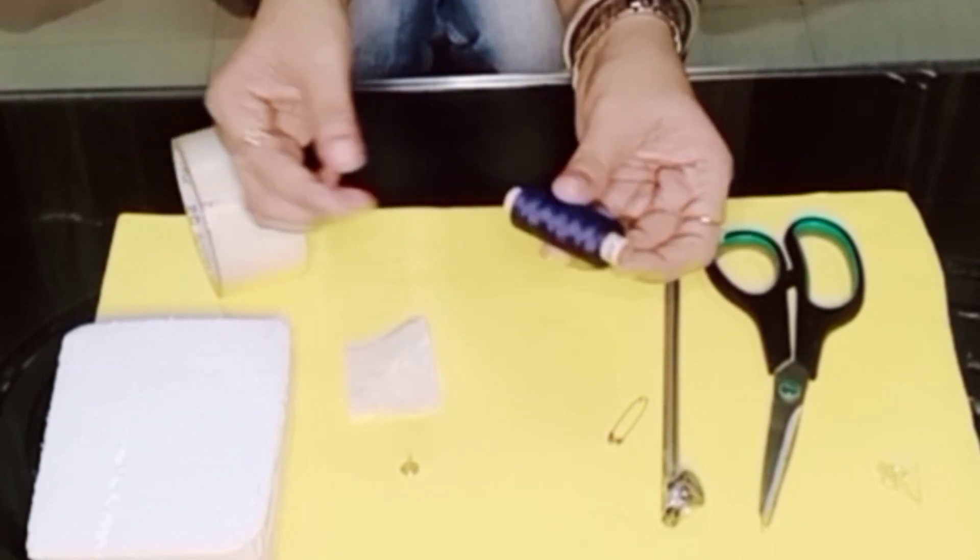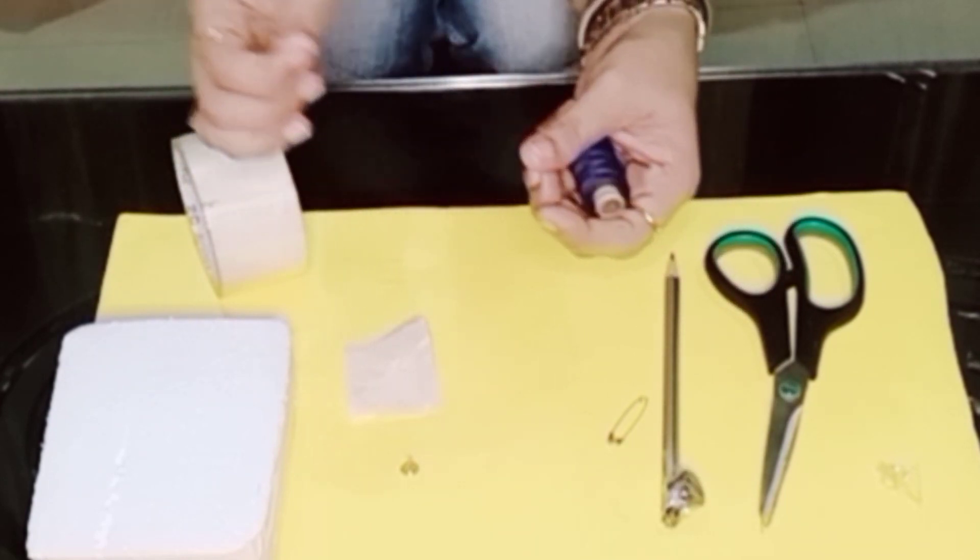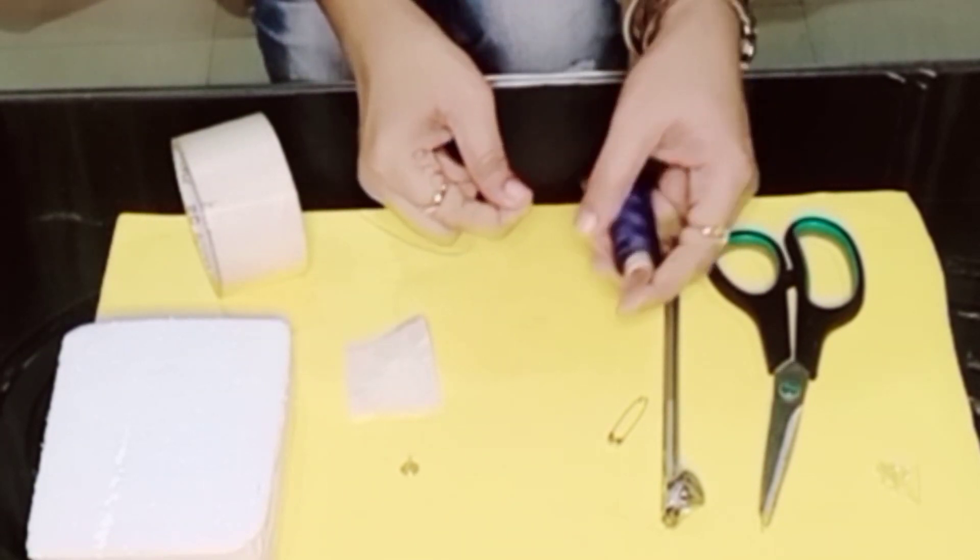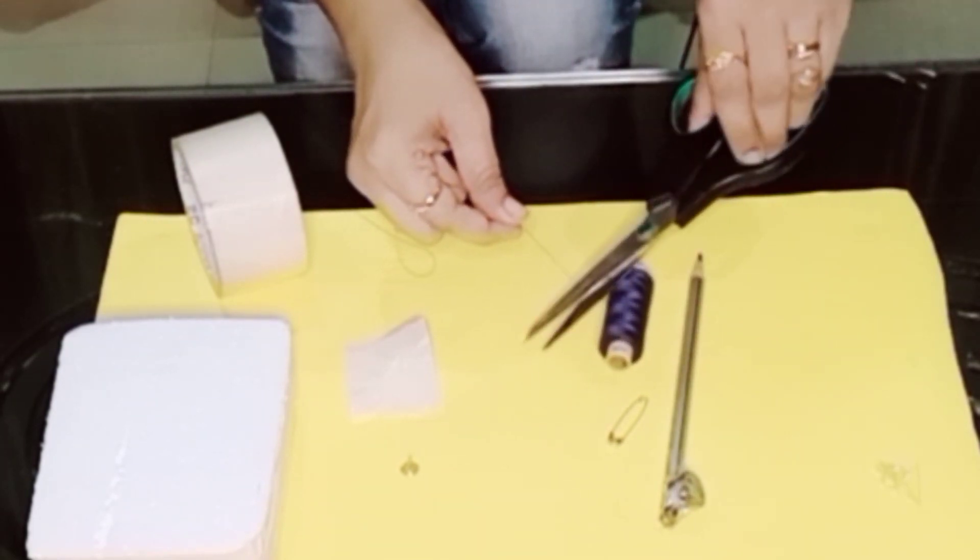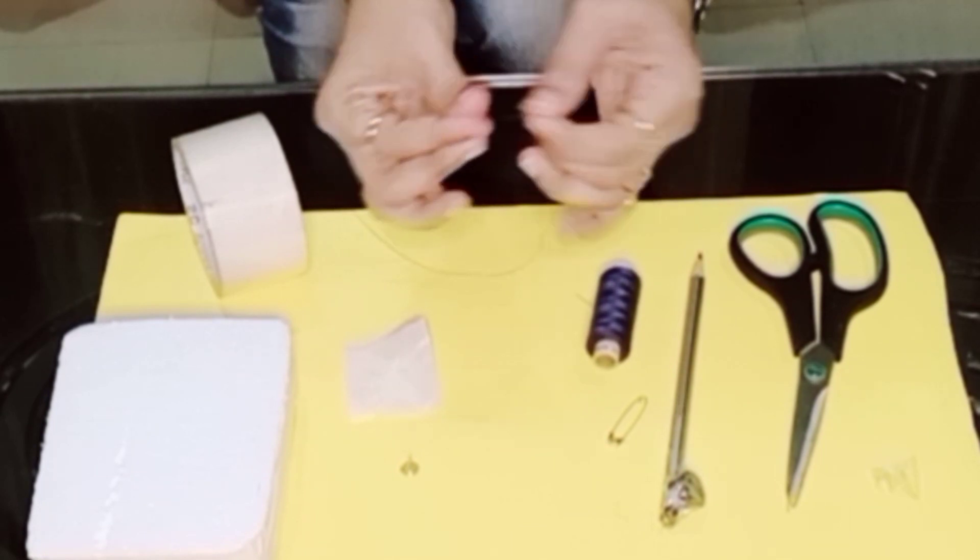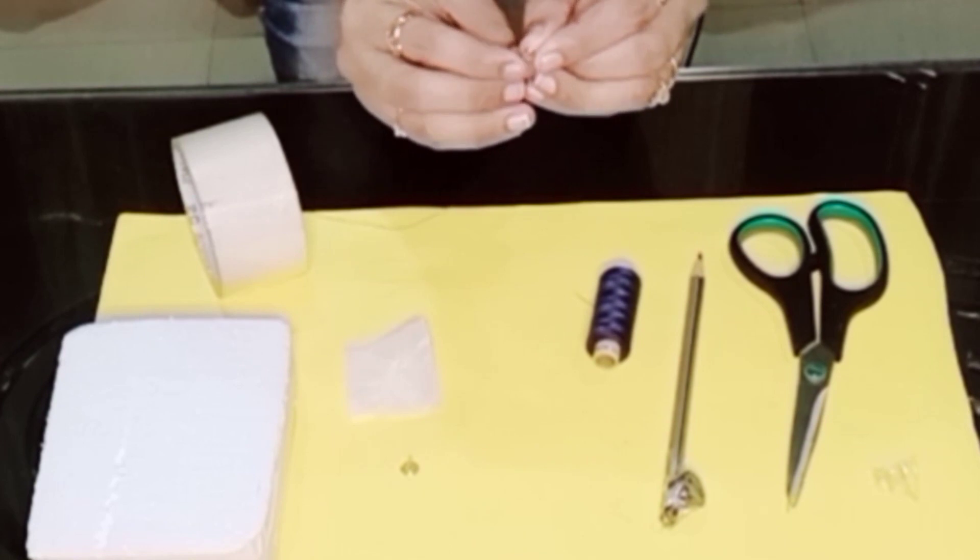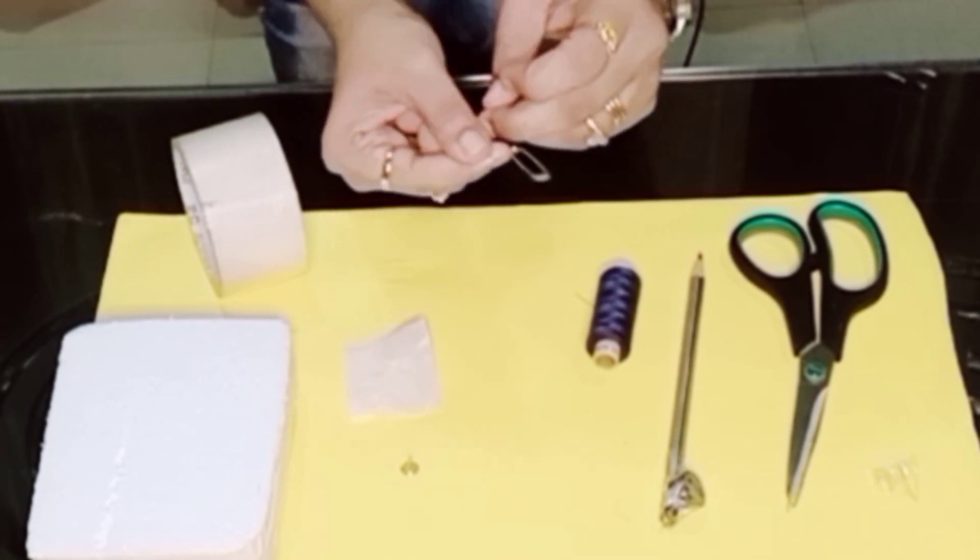Then what I'm going to do is I'll take this thread. I'll insert this thread to the hole of the safety pin and then I'll tie a knot.